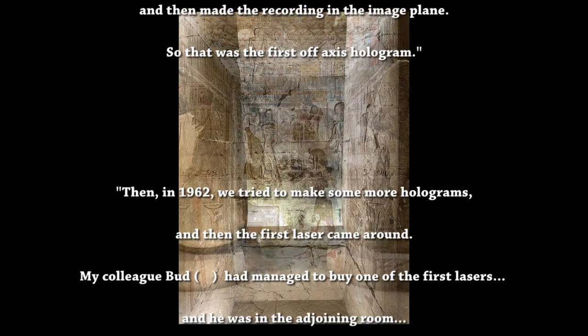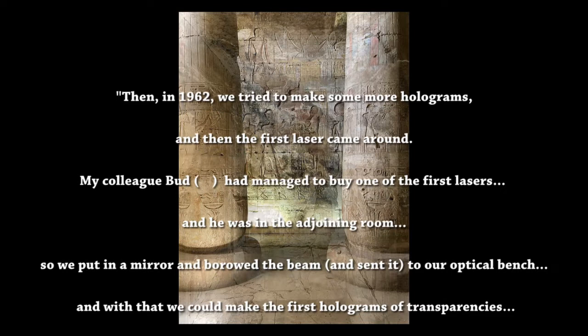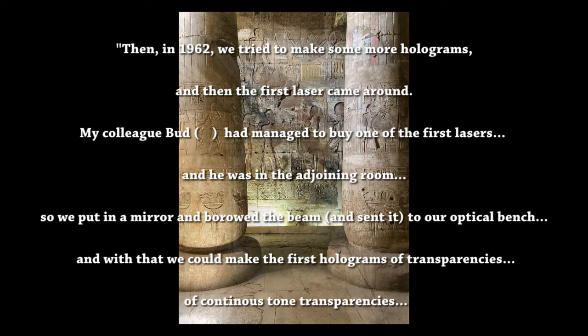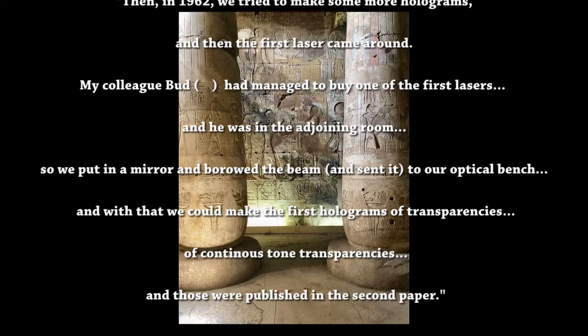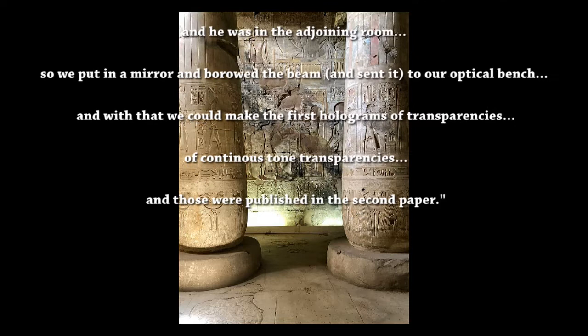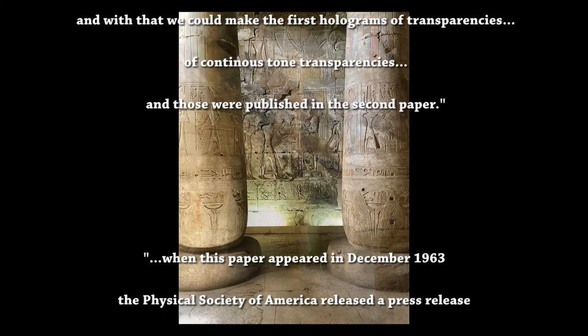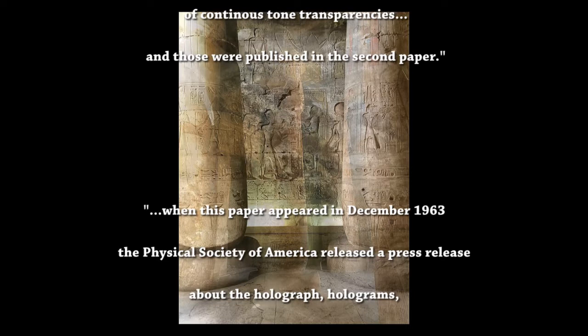Then in 1962 we tried to make some more holograms, and then the first laser came around. My colleague Bud Wunderloot had managed to buy one of the first lasers, which was really expensive — something like ten thousand dollars. He was in the adjoining room, so we put in a mirror and borrowed the beam to our optical bench. With that we could make the first holograms of continuous tone transparencies, and those were published in the second paper.